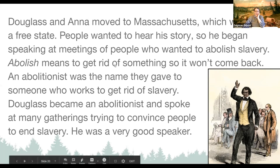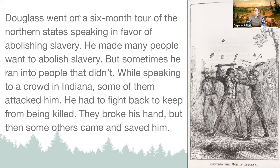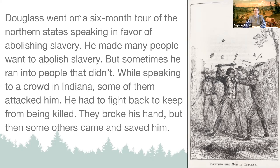Douglass became an abolitionist himself and spoke at many gatherings, trying to convince people to end slavery. He was a really good and effective public speaker. He went on a six-month tour of the northern states speaking in favor of abolishing slavery — going from state to state, city to city. The abolitionists in those cities would set up meetings, and Frederick Douglass would go and talk. He was very convincing and made many people want to abolish slavery.